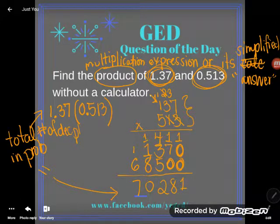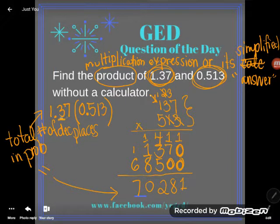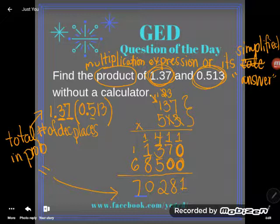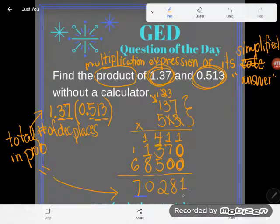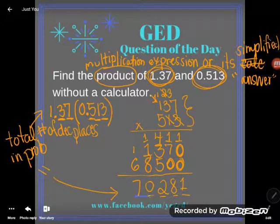So decimal places are those numbers that are right of a decimal. So let's take a look. In this problem I had one, two, three, four, five decimal places. So in my answer I'm going to have five as well. So let's start at the back of this number and go one, two, three, four, five, plop down a decimal place here.